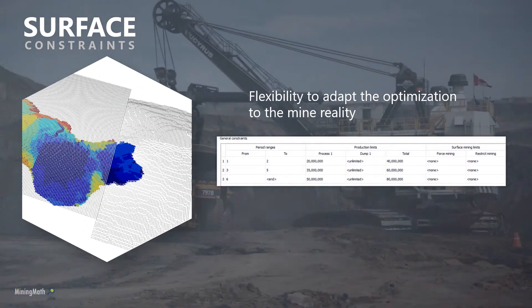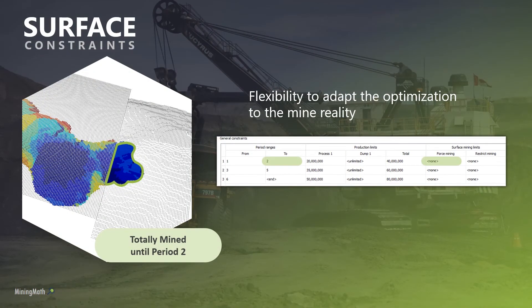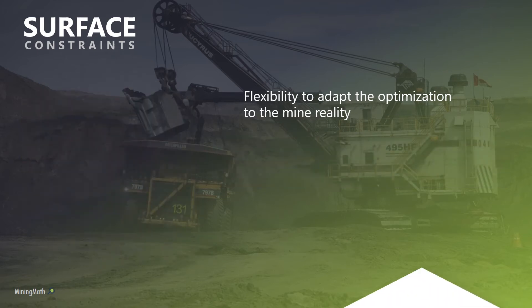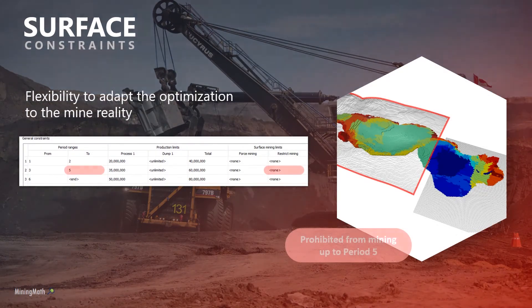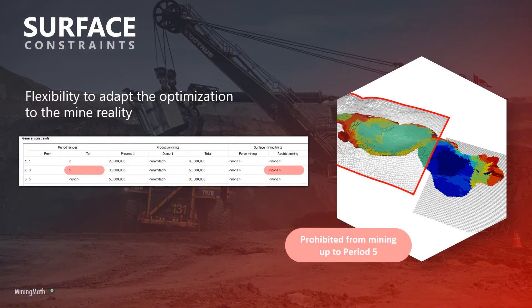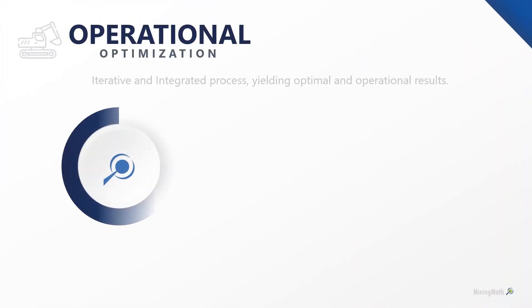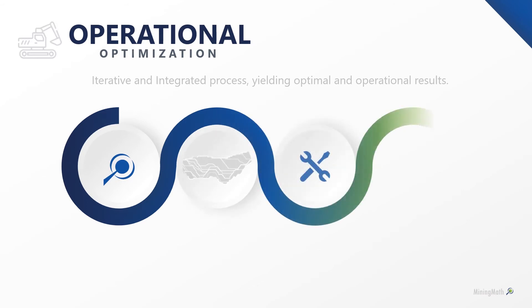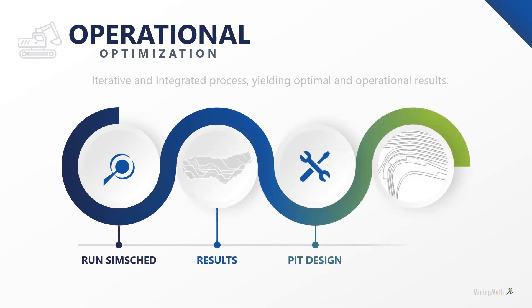The surface constraints provide flexibility to the user to customize the physical areas in which the optimization will occur. When forcing mining, all blocks in the green area must be extracted until the end of period 2. When restricting mining, the optimizer is prohibited from mining below the red region until period 5. This allows for the modeling of in-pit crushers and waste dumps, environmental and social constraints, or any other physical limitations. It's also possible to import designed pits and phases back into SimSched, cycling between optimization and design, aiming for a more realistic final result.